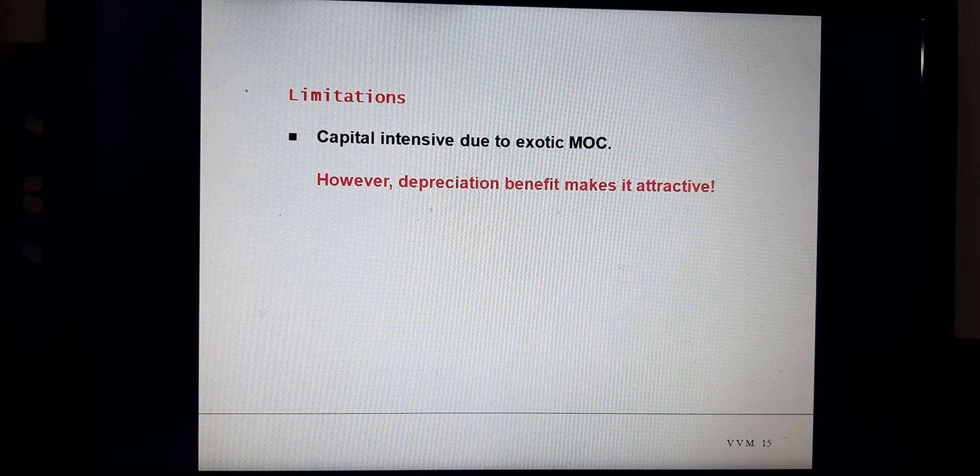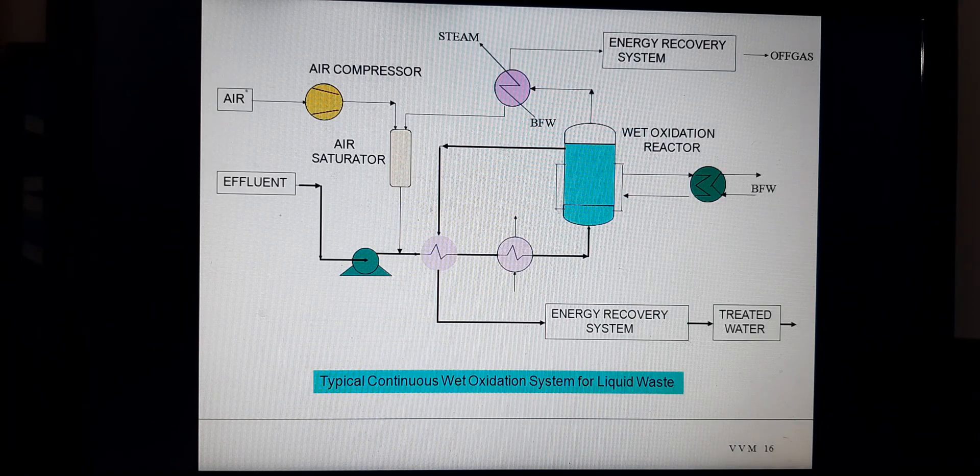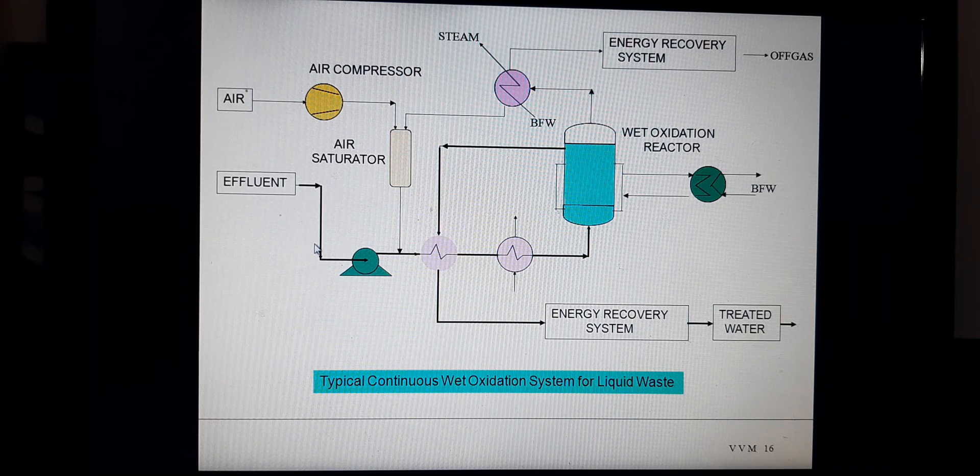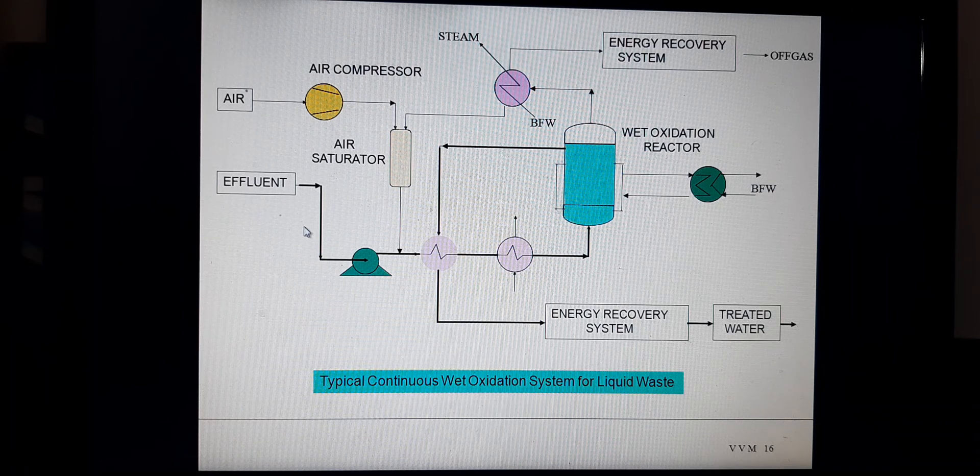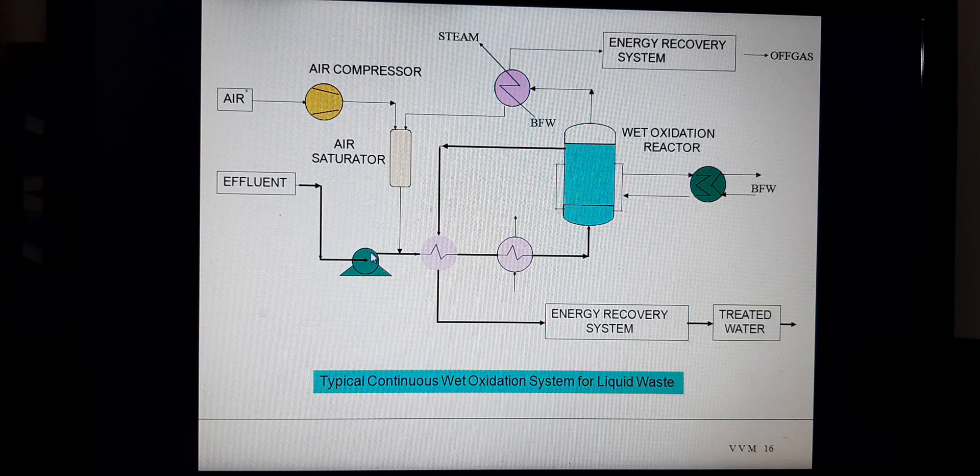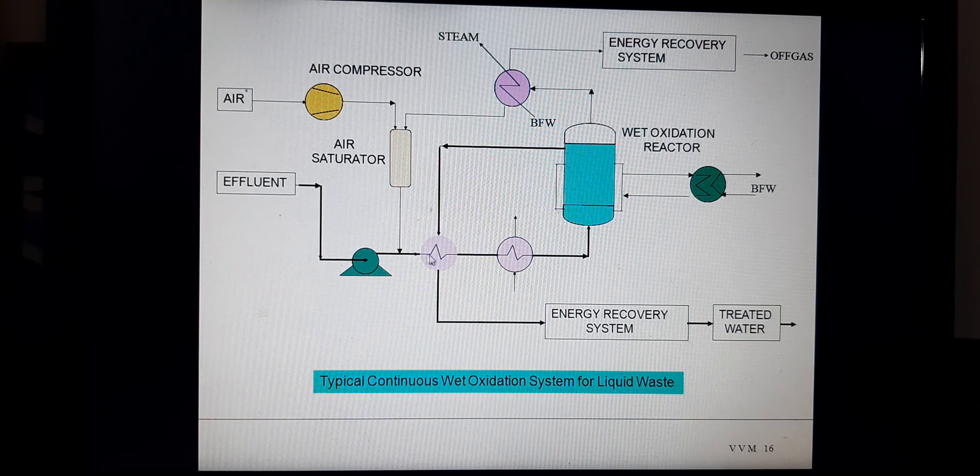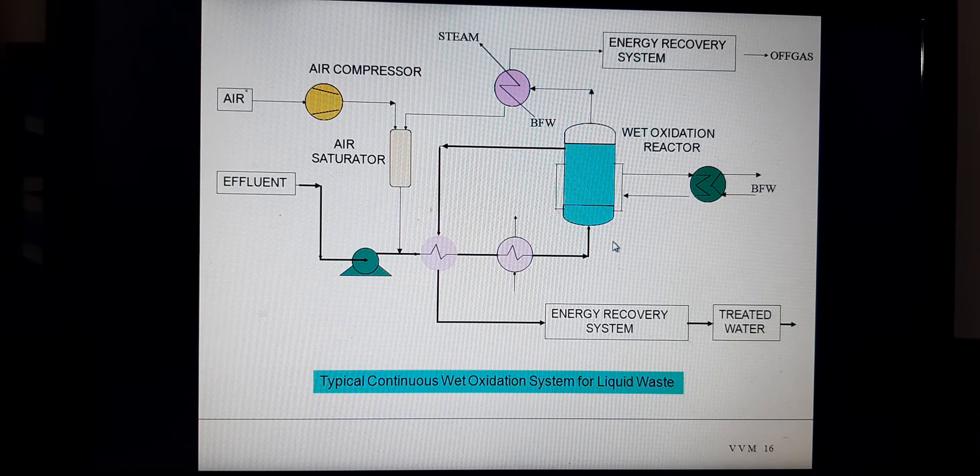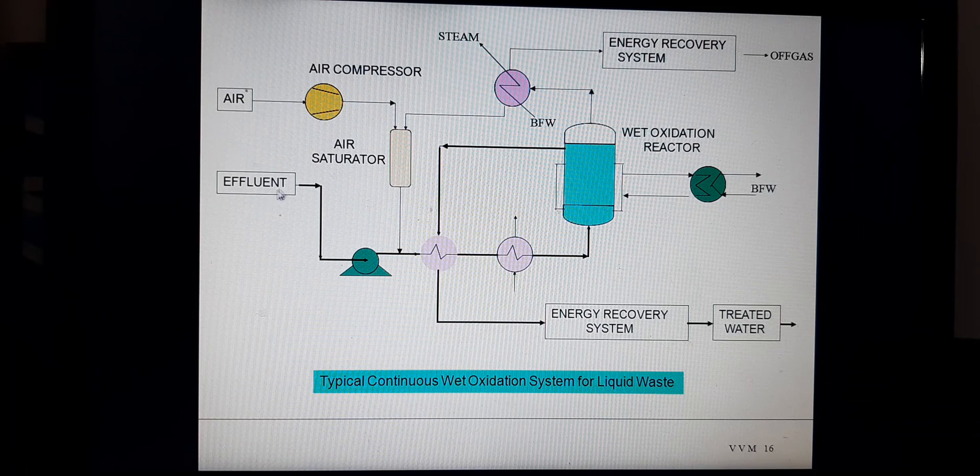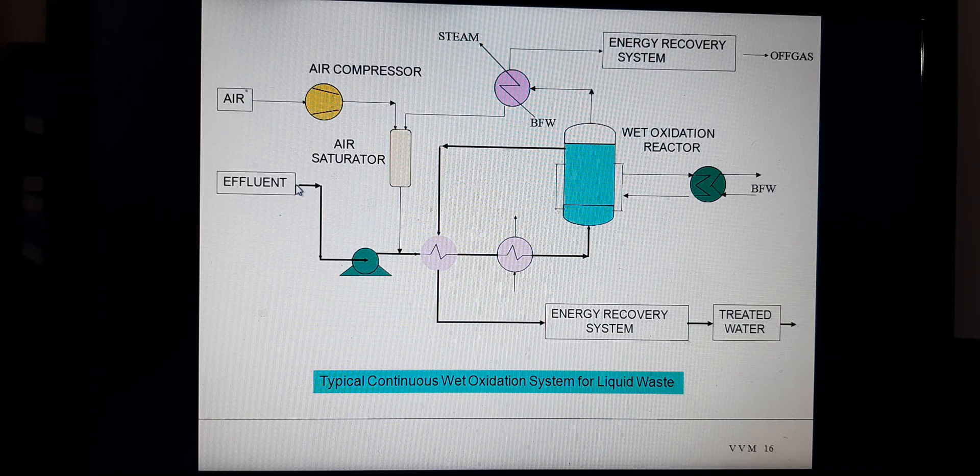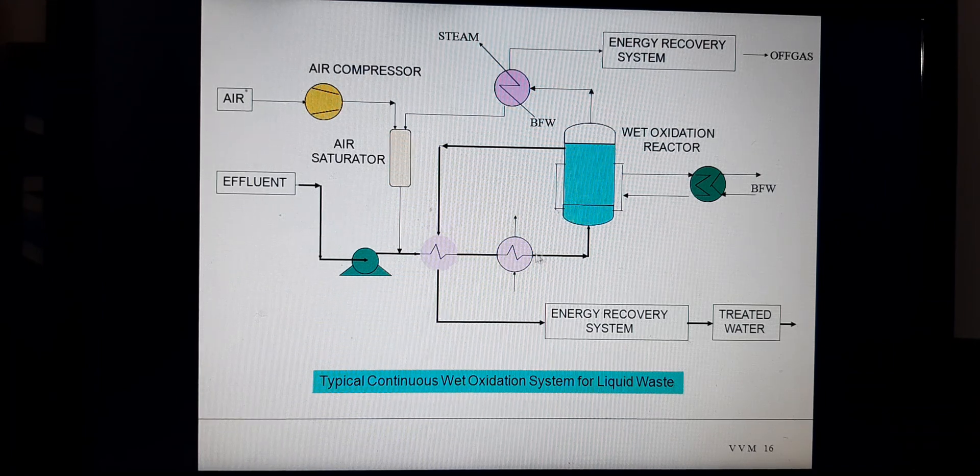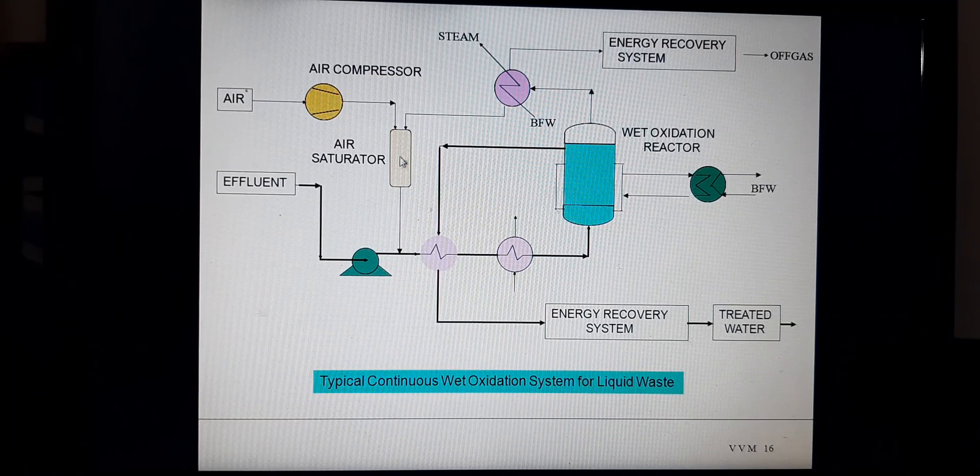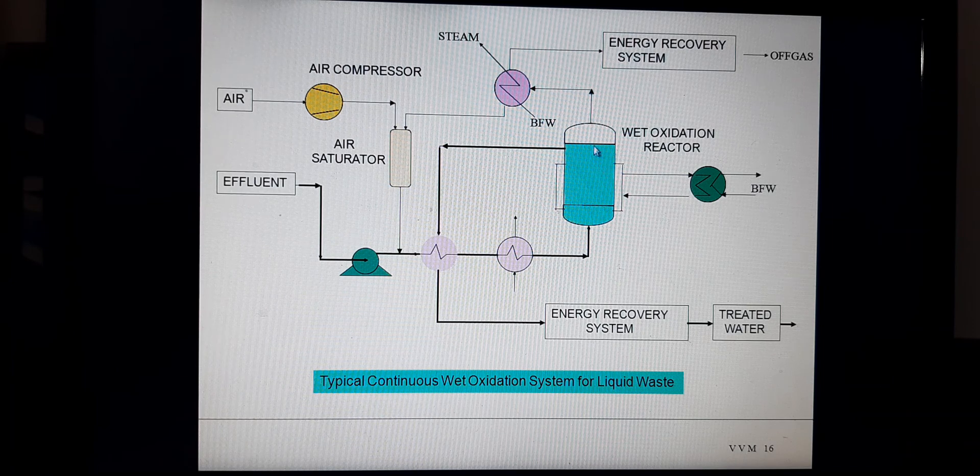This is the flow chart of wet air oxidation. Incoming effluent comes to the pump house, then to the reactor. Effluent goes directly into tertiary treatment, then pumped to the wet air oxidation reactor. From the wet air oxidation reactor, it is recycled. BFW to steam, steam is exhausted.